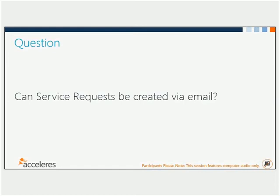Version 3.0 enables you to create either incidents or service requests, but you need a separate Exchange connector to create service requests, which means a separate mailbox. Some customers are dissuaded by having to provide more than one email address to users. If you configure an Exchange connector and set the default template for a service request, you'll generate a service request from inbound email to that mailbox. There have been some issues with activities within email-generated service requests, but those are believed to be fixed in the latest RTM.